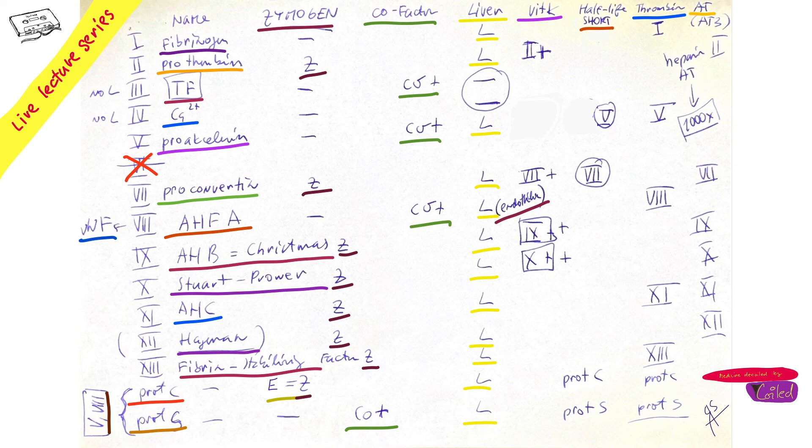Now simple things. That's it for liver, but vitamin K. Which ones are produced by liver with vitamin K? Two, seven, nine, and ten. Regular. Half-life short is five, seven, and protein C and protein S.